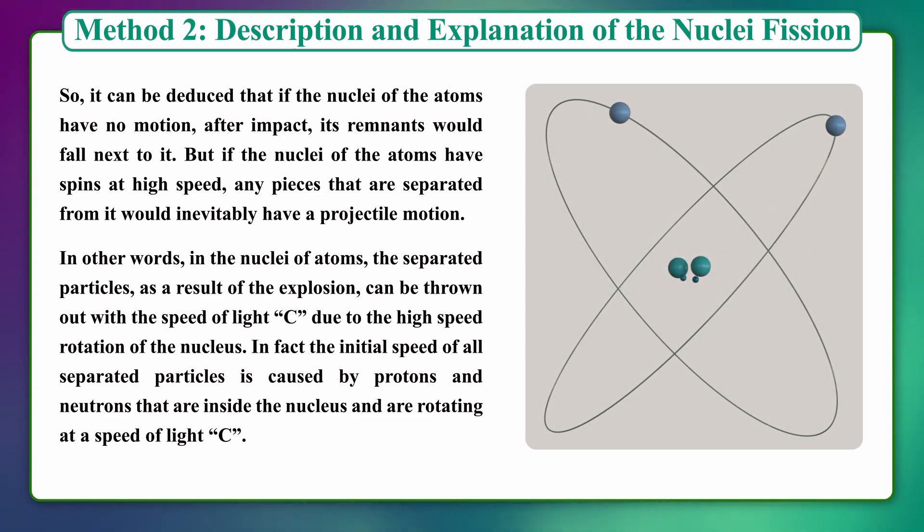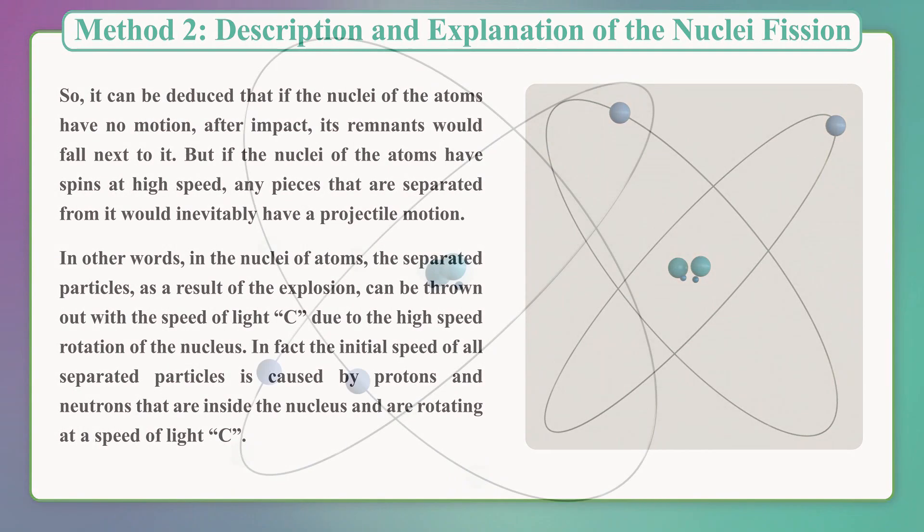In fact, the initial speed of all separated particles is caused by protons and neutrons that are inside the nucleus and are rotating at the speed of light.